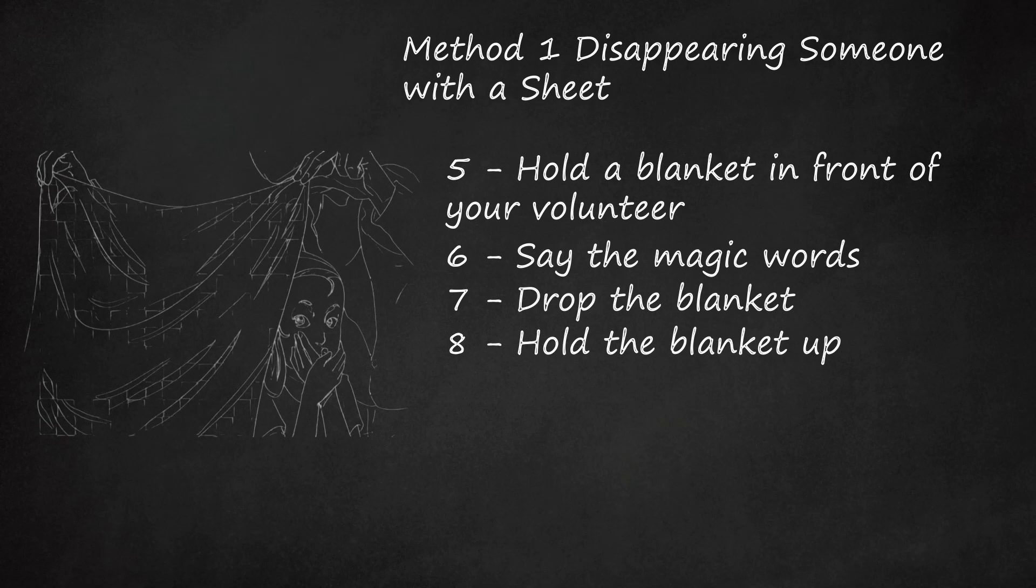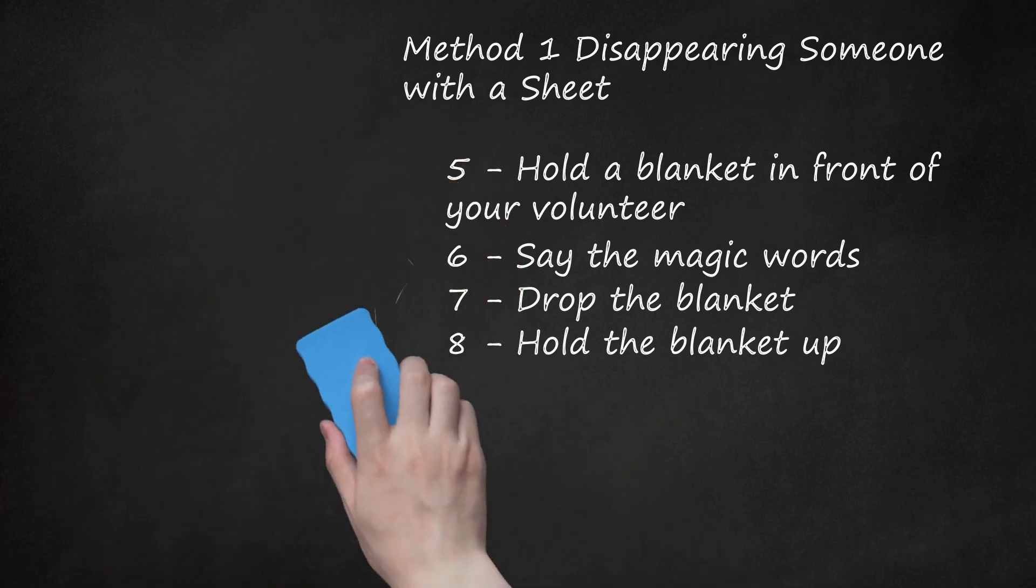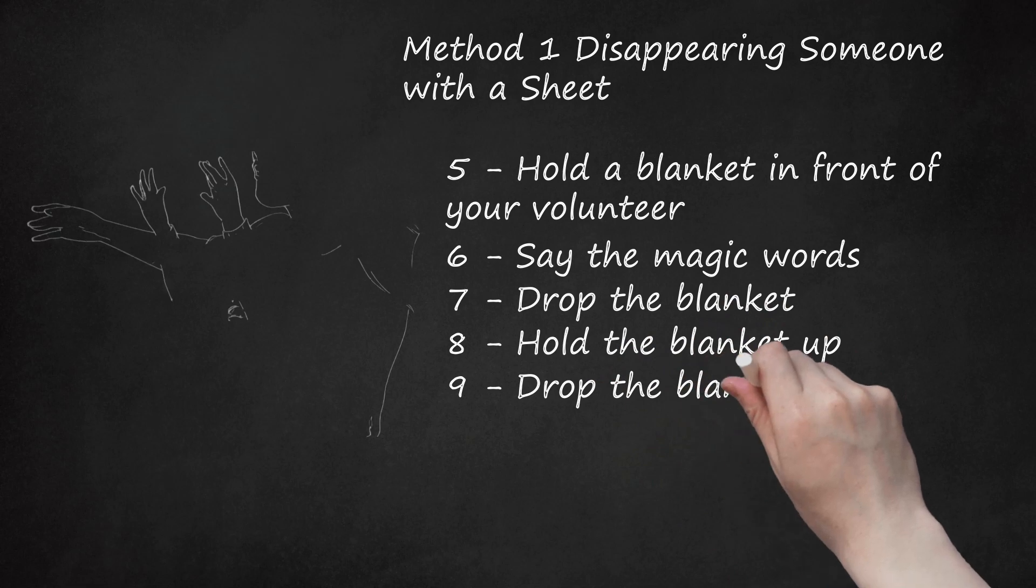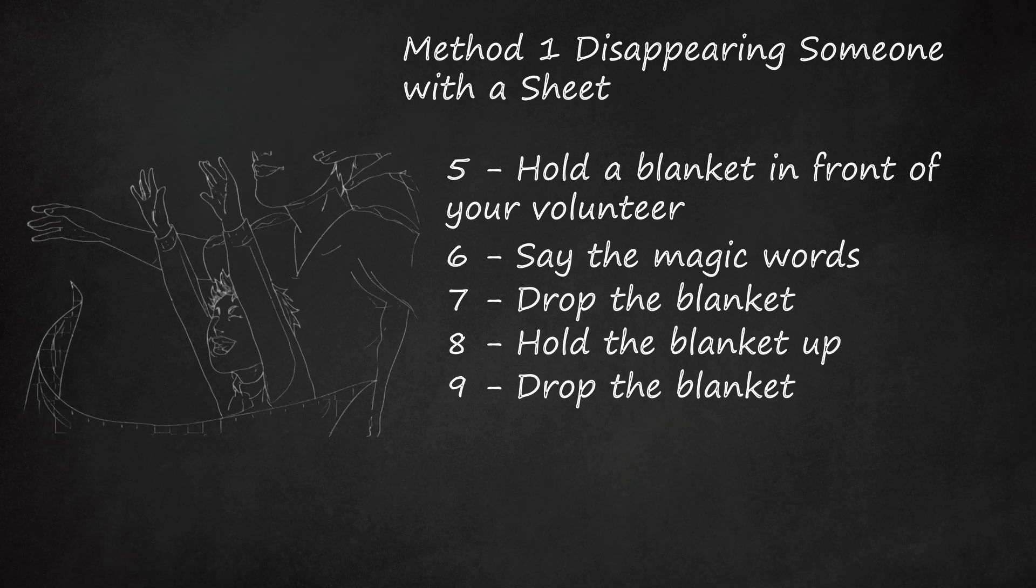Keep a calm demeanor while holding up the blanket. It's up to you if you want to say magic words for her to reappear. This is a preference that will vary for each magician. Step 9 - Drop the Blanket. Now your volunteer will appear standing in the same place as before. It will seem as though you've brought back your volunteer from some unknown abyss.